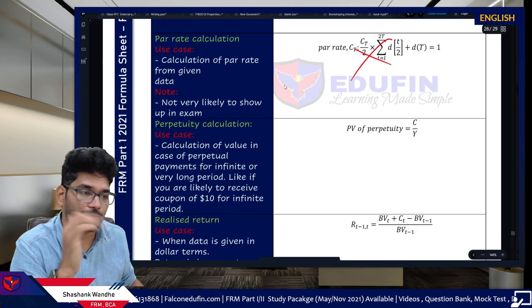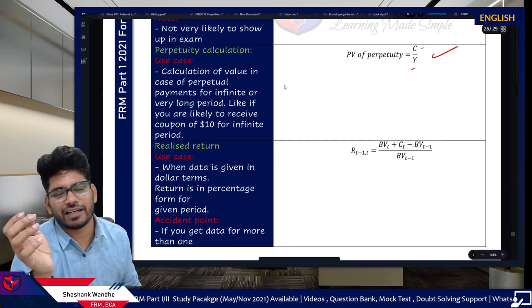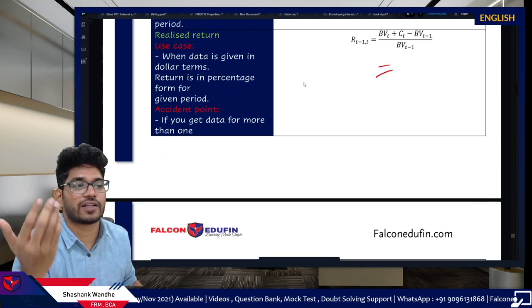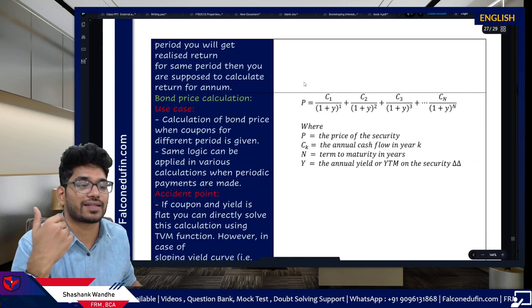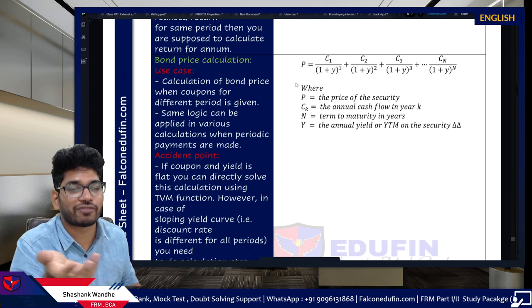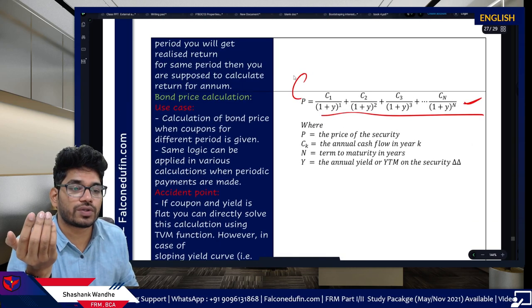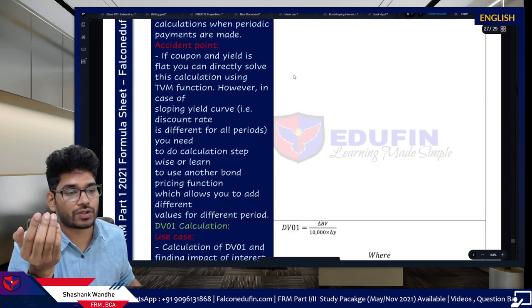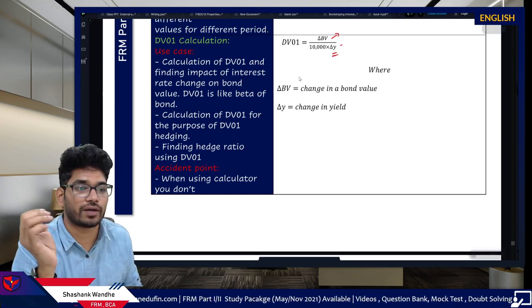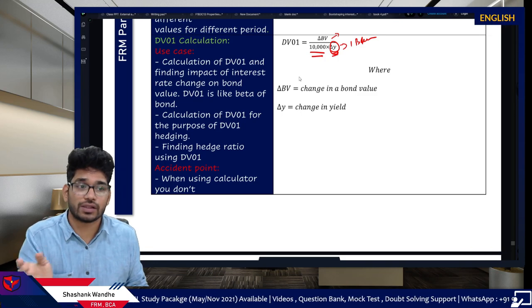Clean and dirty price — we already discussed. Spot rate: use concepts over formulas. Holding period return — formula not recommended. Par rate: not testable; use the calculator if asked. Perpetuity: price = C / Y — very basic formula. Realized yield: (BV_t - BV_{t-1} + coupon) / BV_{t-1}. Bond price calculation formula is complex for exam use, but you must know it for bootstrapping. DV01: change in bond value / yield change, expressed in one basis point — multiply by 10,000 to convert.